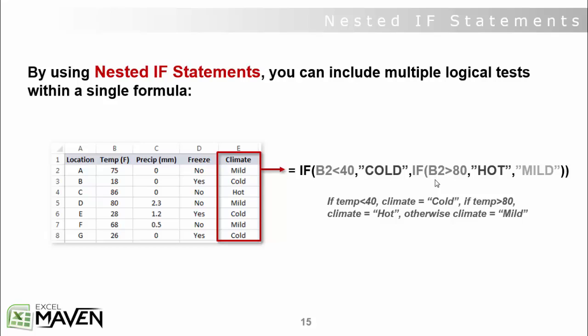And basically, what that does is it tells Excel, alright, logically work your way from left to right through this formula. And continue until you either find a test that evaluates as true, or you get to the end where your value if false value lives.